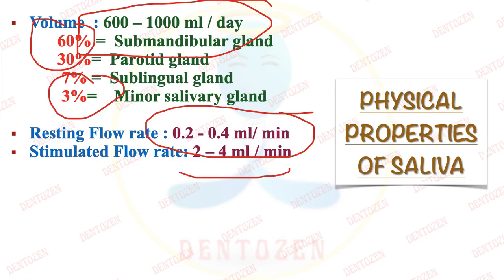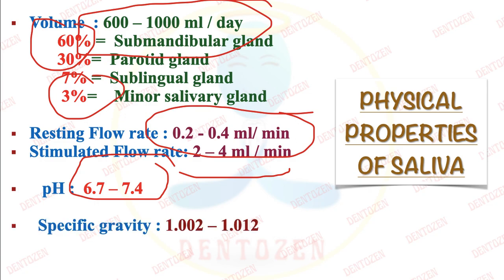The next important question is the pH of saliva. The pH is always in a range — it is not fixed. It is 6.7 to 7.4; some texts differ slightly, but you can always mention 6.7 to 7.4. The specific gravity is 1.002 to 1.012.